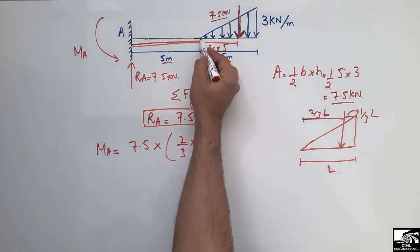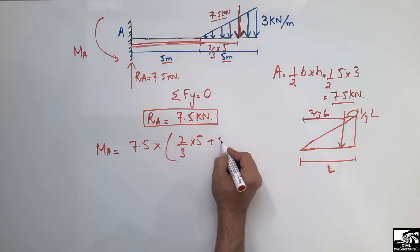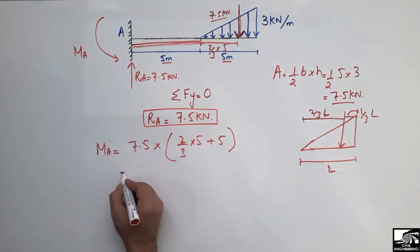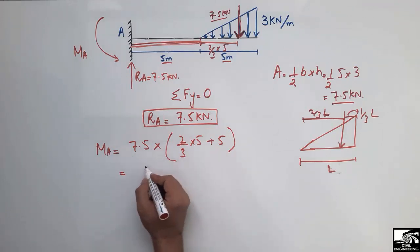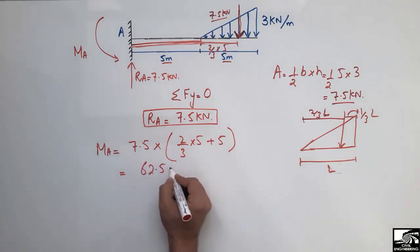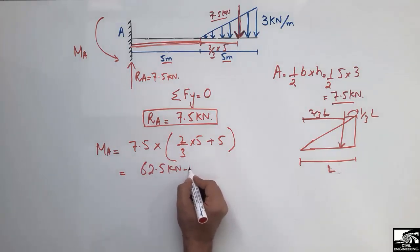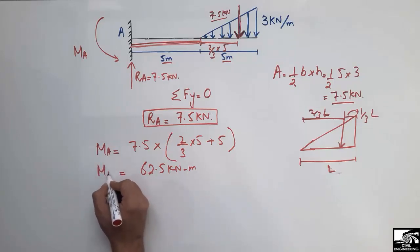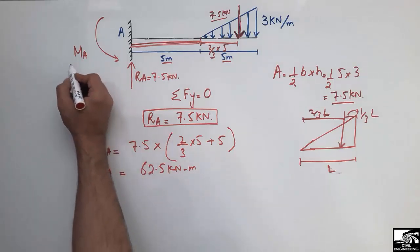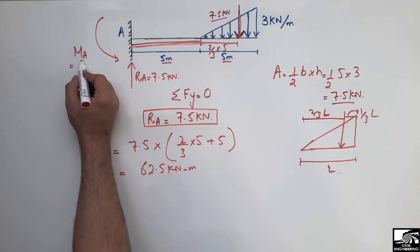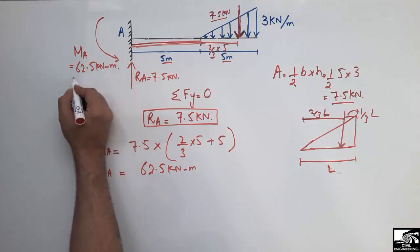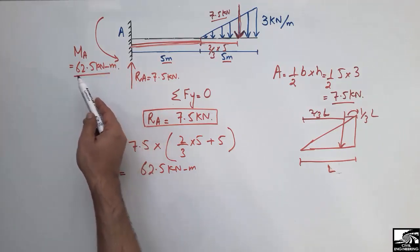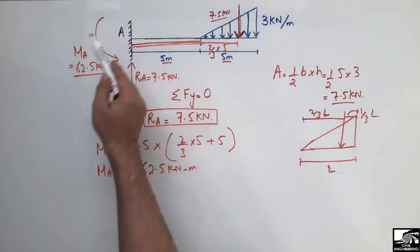Calculating the moment at support A: MA = 7.5 × ((2/3 × 5) + 5) = 7.5 × (3.33 + 5) = 7.5 × 8.33 = 62.5 kN·m. So MA = 62.5 kN·m.